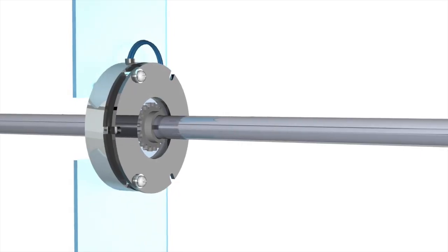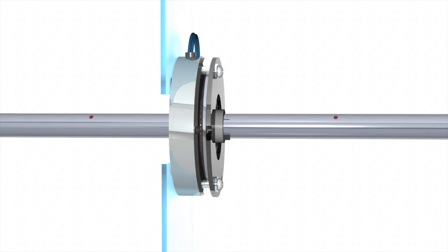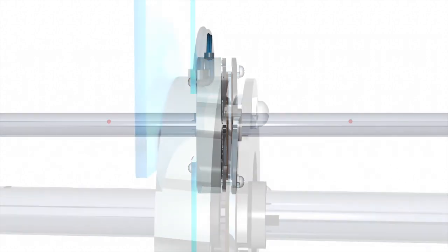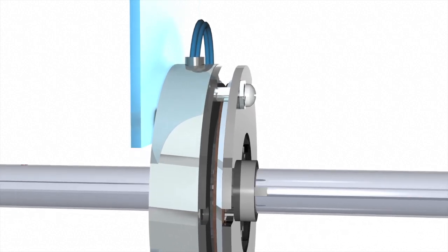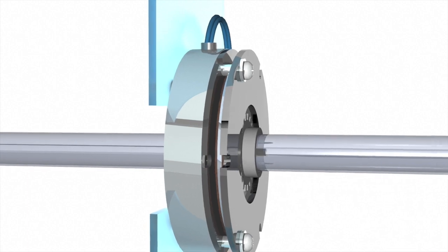Electric spring applied brakes, or electromagnetic direct current single disc spring-set brakes, are the most common type of holding brake produced. Electromagnetic spring-applied brakes are designed to stop and hold a rotating shaft or to simply hold the shaft in place.